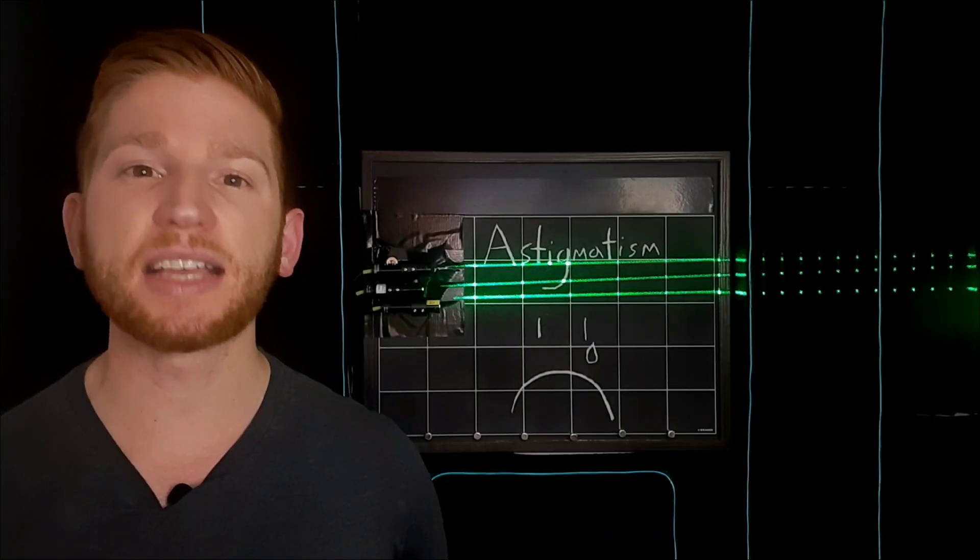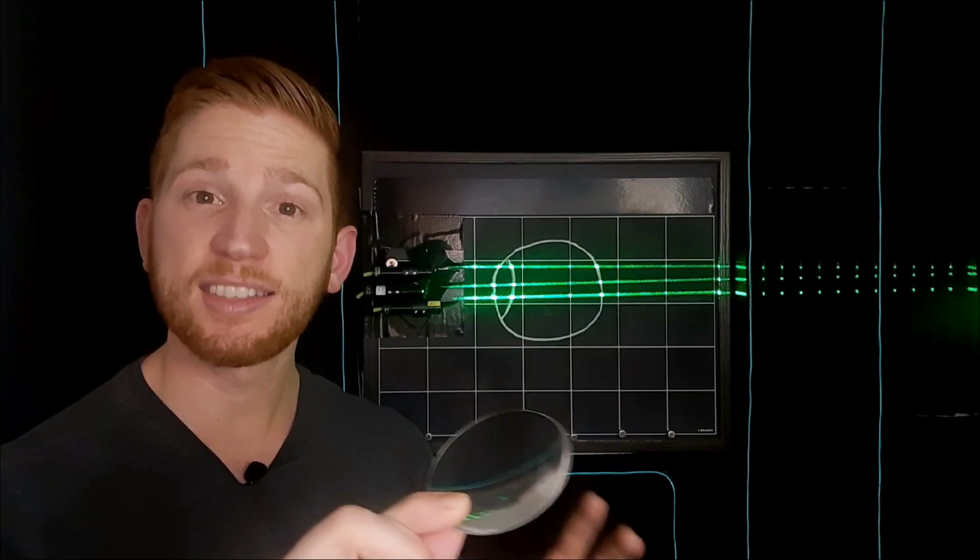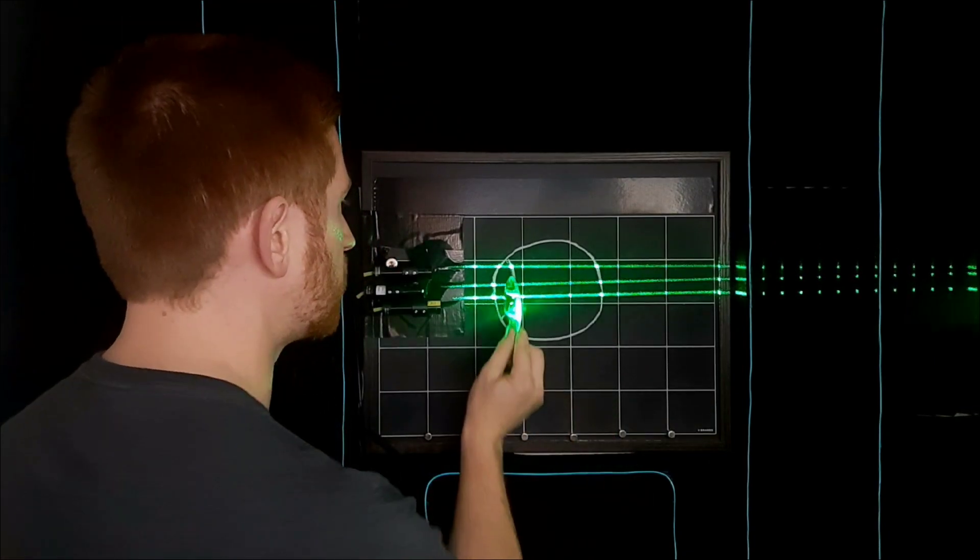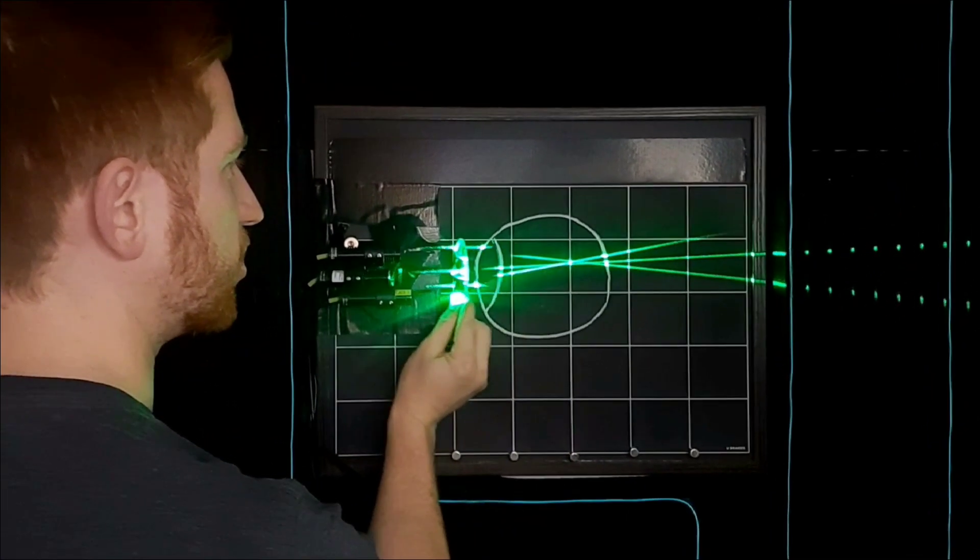It's caused by having astigmatism in your eyes. Astigmatism means that your eyes bend light differently in different directions.